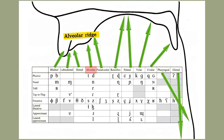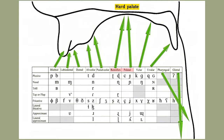Next, the passive articulator for post-alveolar sounds is the back of the alveolar ridge. Next we have the hard palate — the hard palate is the passive articulator for retroflex and palatal sounds. Next, for velar sounds, the passive articulator is the velum or the soft palate, further back on the roof of the mouth.